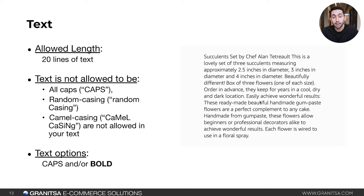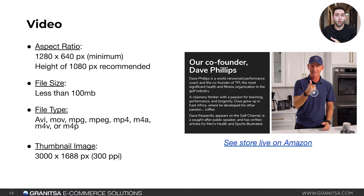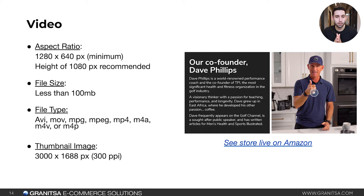Here's an example of what a text block might look like. The video content block can be full width or incorporated into a split section. The minimum aspect ratio is 1,280 by 640, but we recommend standard 1080p. File size must be under 100 megabytes — you can use a video compressor if needed. Compatible file types include MP4 and MOV. The thumbnail image can be 3,000 pixels wide by 1,680 pixels tall at 300 PPI.